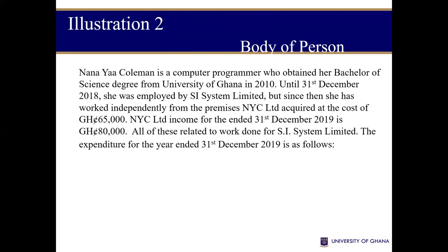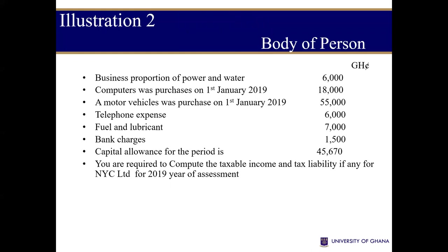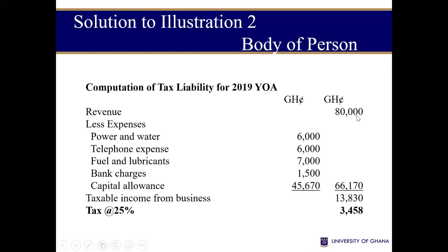Now let's look at the second scenario. It's just as the first one we discussed. The only difference is that Naya did not form a sole trading business but rather formed NYC Company. Because it's a company with the same data, the revenue and expenses are the same. But when it comes to taxation of companies or corporate entities, it is not subjected to the individual tax schedule. Rather, all companies have a tax rate of 25% generally. But if you are in the hotel industry, you have 22%. So the corporate tax rate of 25% will give us $3,458 tax.